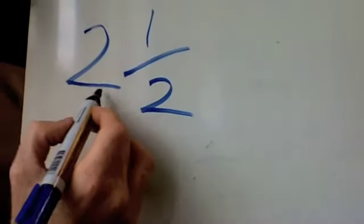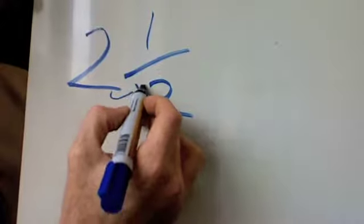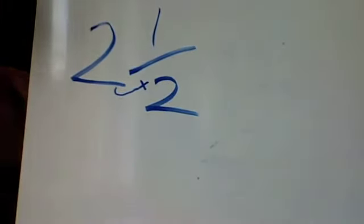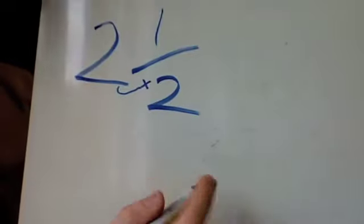what I do is I take the full number and I times the denominator of the fraction. 2 times 2 gives me 4,